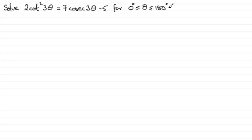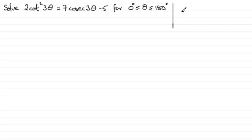How do we go about solving something like this? First, I notice it's in the same angle 3θ, so that's good. But next I notice it's in different trigonometric functions — cot and cosec — so I need to get them into the same function. To do that I need to call upon an identity: one plus cot²x is identical to cosec²x.